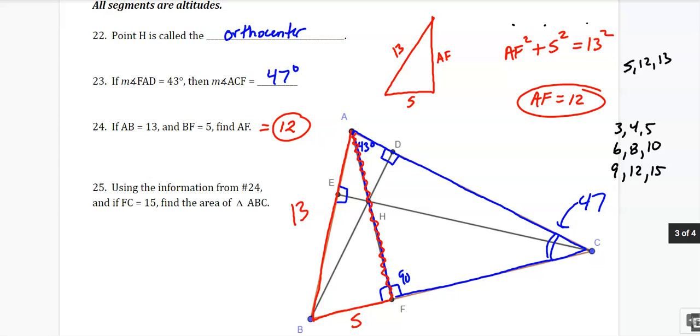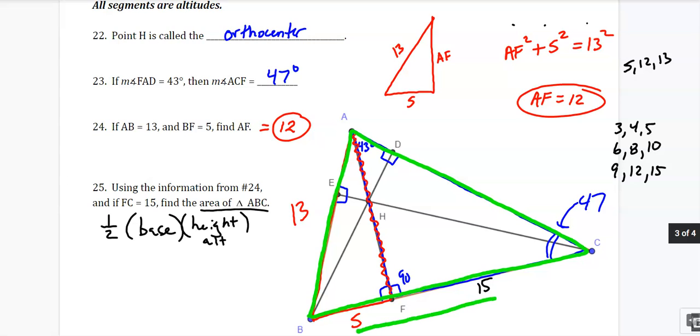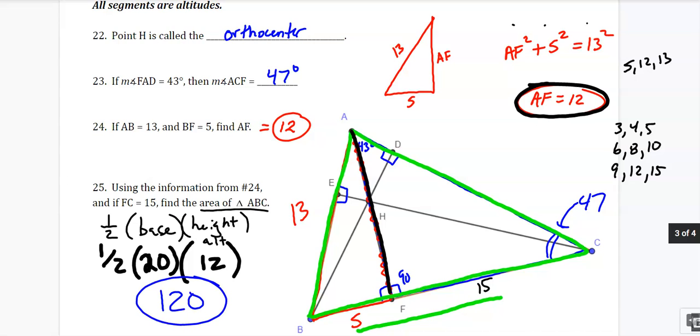Using the information from number 24, if FC is 15, so FC is this little side over here, find the area of ABC. So to find the area of a triangle, it's one half base times height. And height is really just another easier name than altitude. I'm going to look at this whole triangle. I know this base down here. This base at the bottom is 5 plus 15. So the base is 20. And the height, which is right there, which we just found, the height's 12. So one half of 20 times 12. Half of 20 is 10, and 10 times 12 is 120. So there's your answer for area.